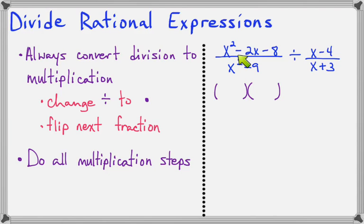Okay, I've already got us an example over here, so let's do x squared minus 2x minus 8 over x squared minus 9 divided by x minus 4 over x plus 3.